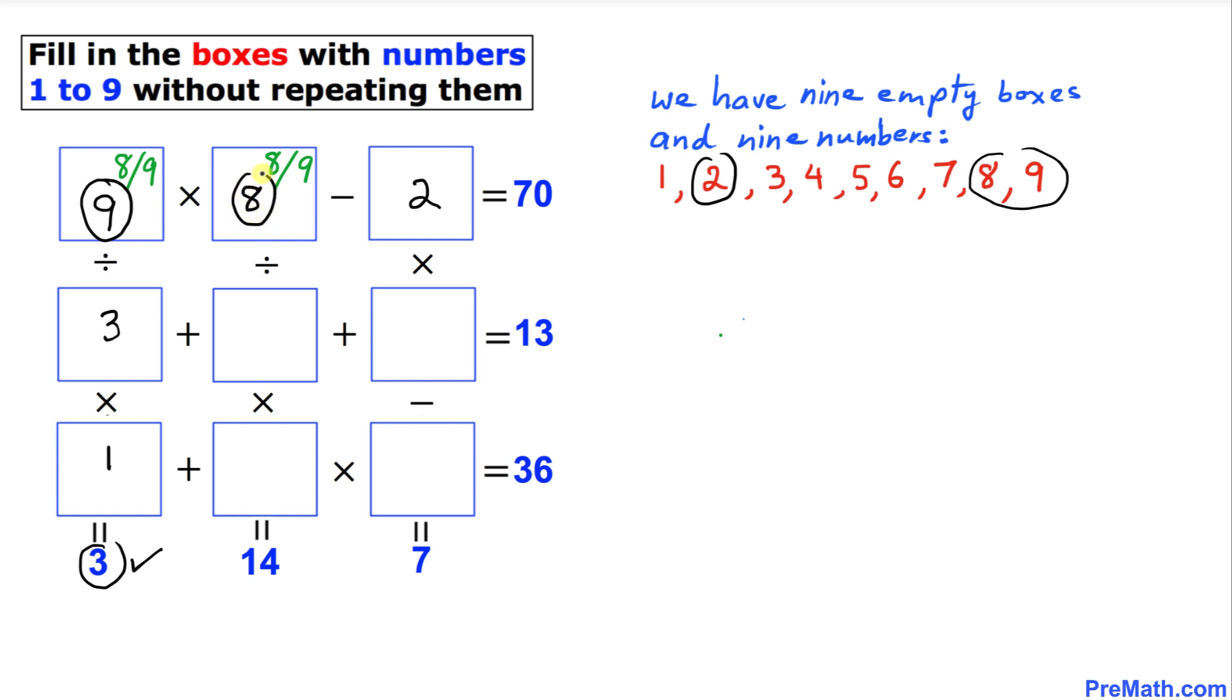Now we can see that 3 and 1 have been used up, so I'm going to go ahead and circle number 1 and 3 as well. Now let's focus on this middle column.